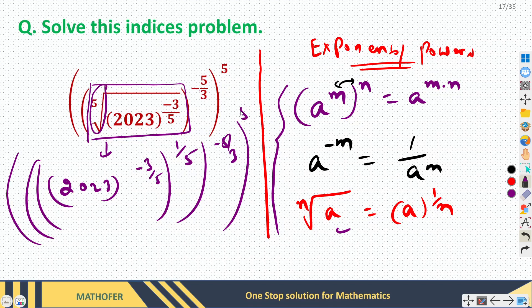Now here we can multiply all these three powers, right. We can directly multiply these three powers using this property, the first one.